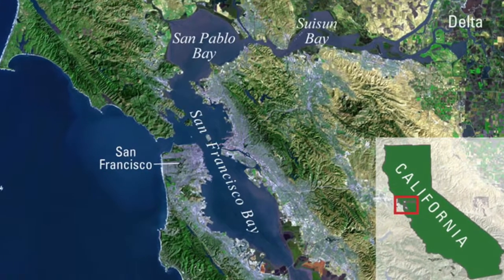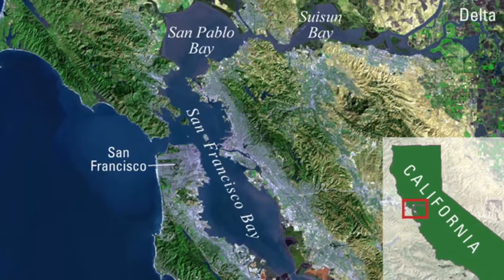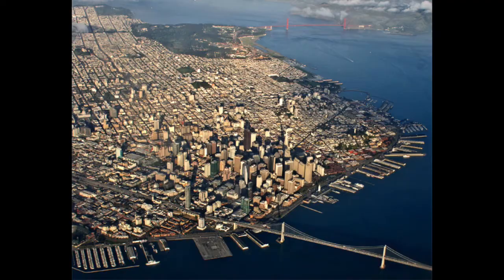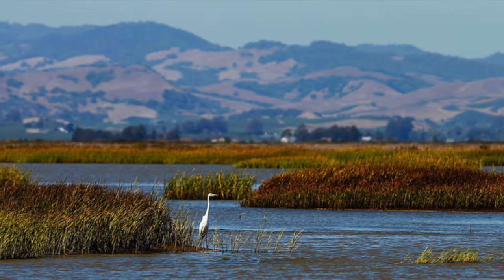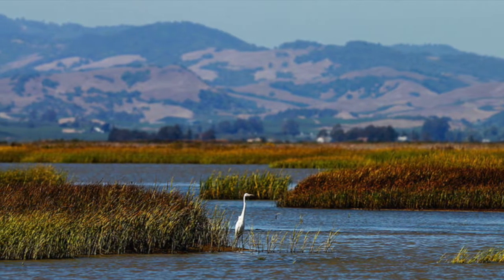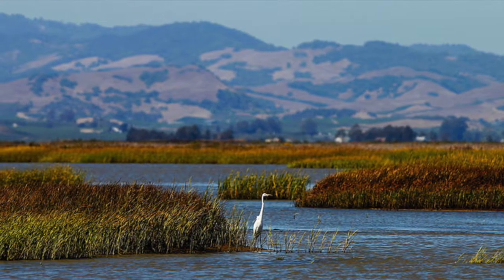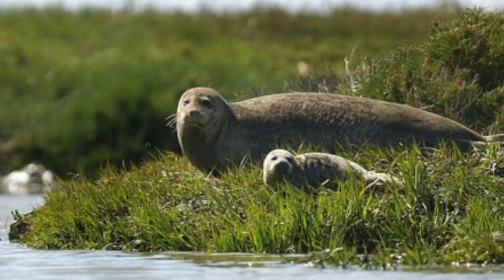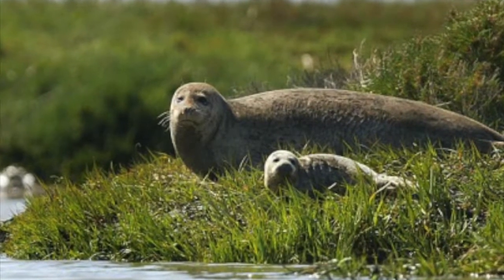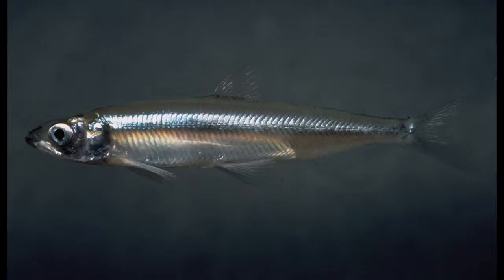The San Francisco estuary is a complex ecosystem that lies adjacent to one of the most highly urbanized areas in the United States. This estuary provides crucial habitat for many endemic and migratory species of plants, animals, and resources that hold ecological and economic importance to the San Francisco estuary and beyond. Such species include the endangered Delta smelt.